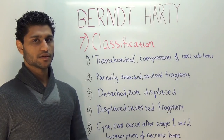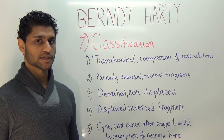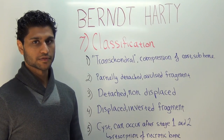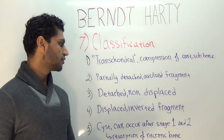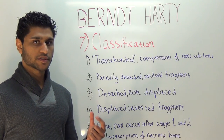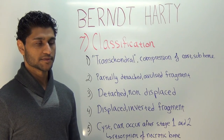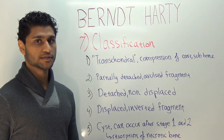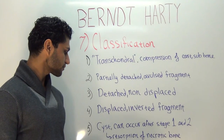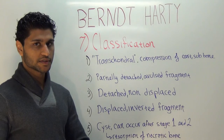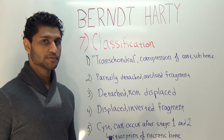The classification is based on radiographic findings. There are four stages originally described by Berndt and Harty, with Ulmer later adding a fifth. Stage 1 is a transchondral lesion — compression of the cartilage or subchondral bone with no cancellous bone involvement. Stage 2 is a partially detached lesion where the fragment remains mostly attached to the talus. Stage 3 is a completely detached but non-displaced lesion. Stage 4 is a completely detached and displaced lesion — the fragment may also be inverted. Stage 5, added by Ulmer, is a subchondral cyst that can occur after Stage 1 or 2 due to resorption of necrotic bone, and may be associated with arthritis.